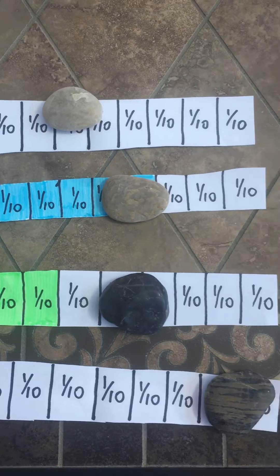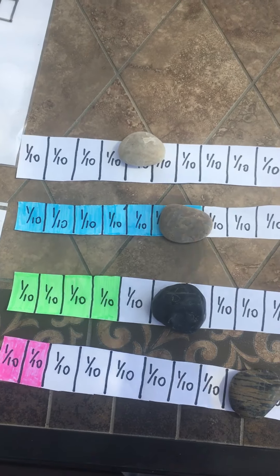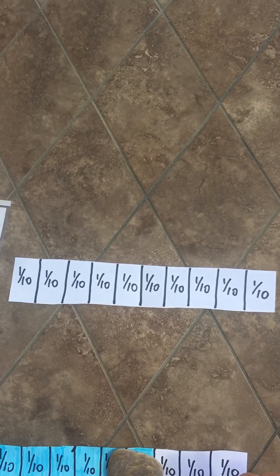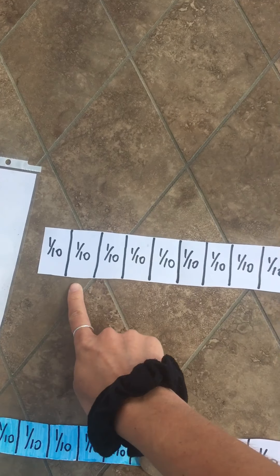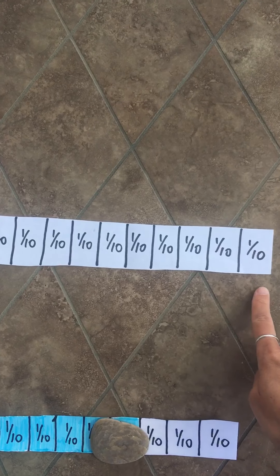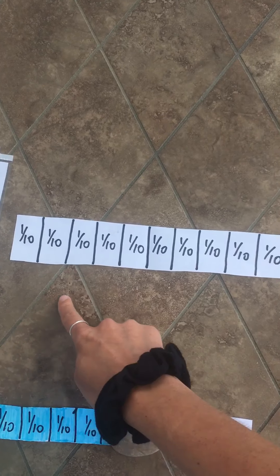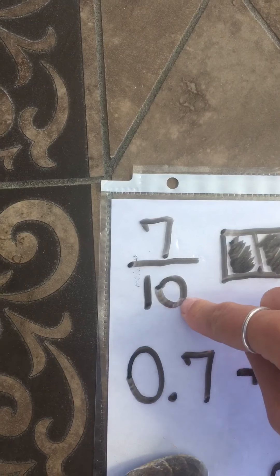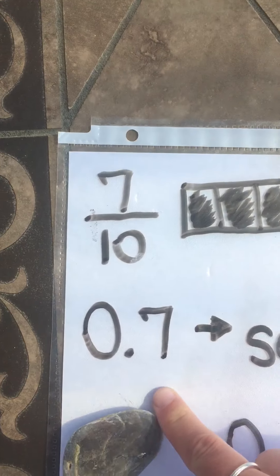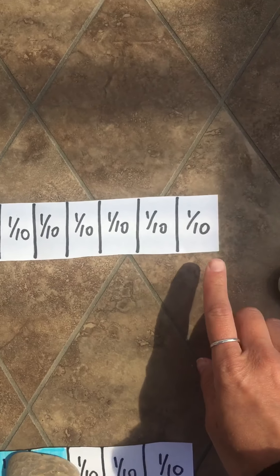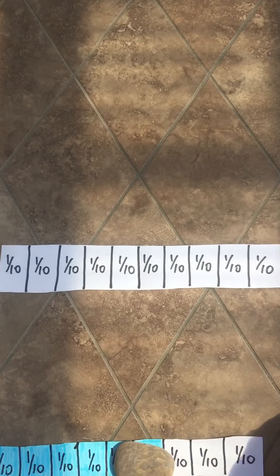So we're going to look at some decimal and fraction strips to help us. This first one is blank and it shows tens — 1, 2, 3, 4, 5, 6, 7, 8, 9, 10 — all 10 pieces together. That represents my 10 at the bottom of my fraction, and it represents this tenths place. So I have 10, each piece is worth one here, and there are 10 pieces together.